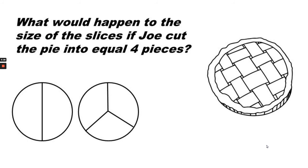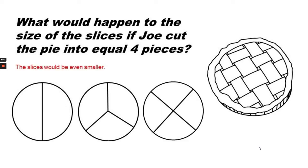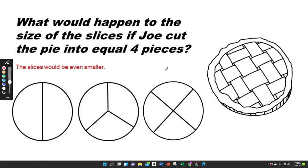What would happen to the size of the slices if Joe cut the pie into four equal pieces? The slices will get even smaller. Four equal pieces would look like this.